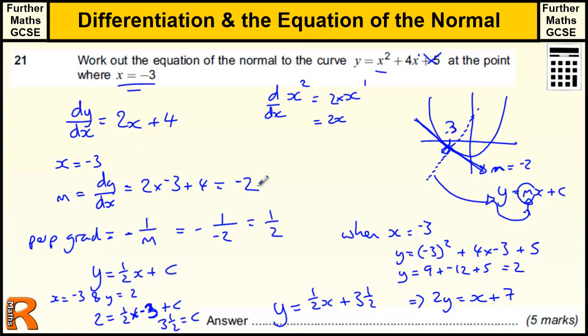One mark for getting the gradient, when we put the minus 3 in, which is minus 2. One mark for getting the gradient of the perpendicular, which is the normal, what we call the normal, this line is at right angles to this point.